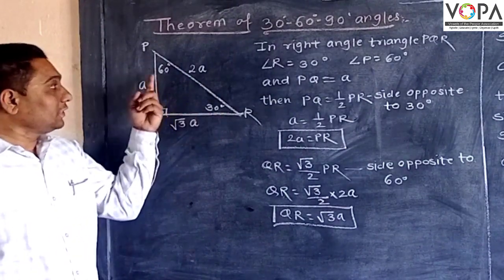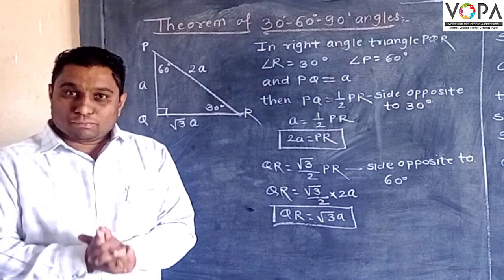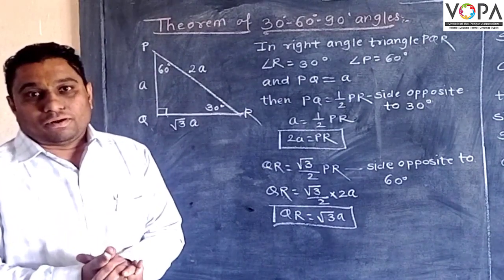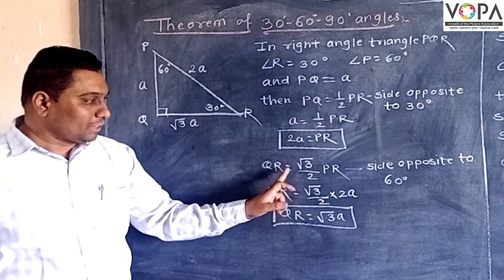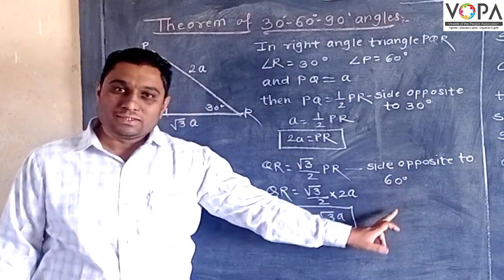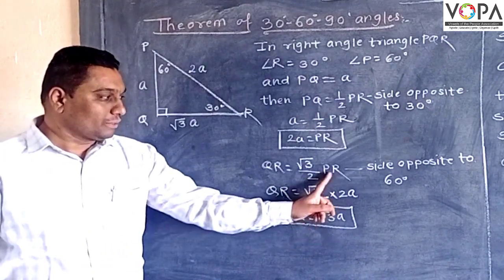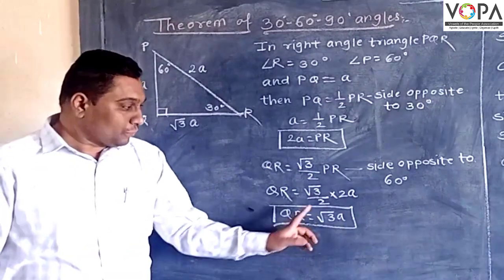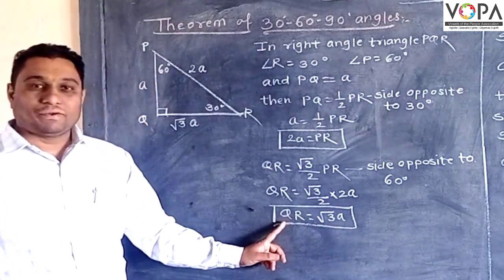Now side QR, which is opposite to the 60 degree angle — the side opposite to the 60 degree angle is under root of 3 by 2 of the hypotenuse. Therefore QR is equal to under root of 3 by 2 of the hypotenuse. The value of PR has been evaluated earlier as twice of a. So 2 and 2 get cancelled, and under root of 3a is the value of QR.